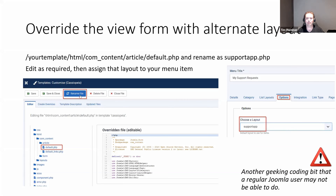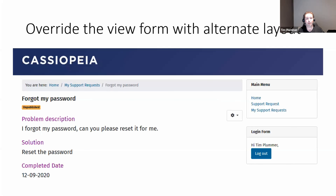Now when we open up the view form, it looks significantly different. I've turned off all those hits, date, and that sort of stuff, and formatted the custom fields differently. I'm not saying I'd design exactly like this, but I'm just showing a dramatic difference from what it was originally. You'd probably also add the name of the person who created it, the date, the status, and that sort of stuff. At the moment it's just showing the custom fields.